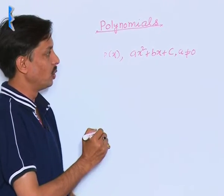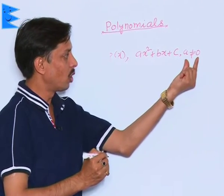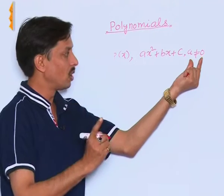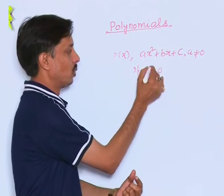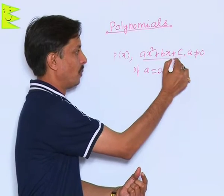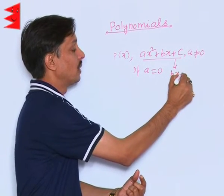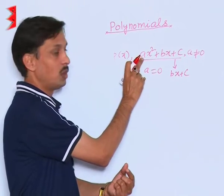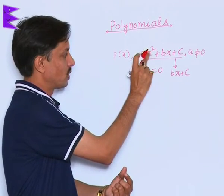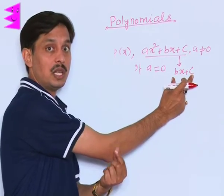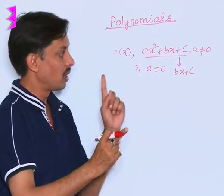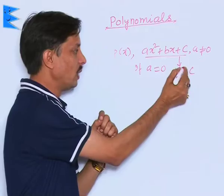I want to explain you the reason for A is not equal to 0. Because if A will become equal to 0, then this polynomial will reduce to B x plus C. If I put A as 0 here, 0 into x square will be 0, so the left polynomial will be B x plus C, which will not be a quadratic, which will be only linear.